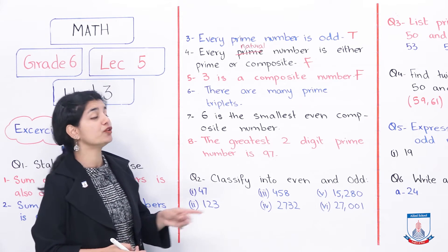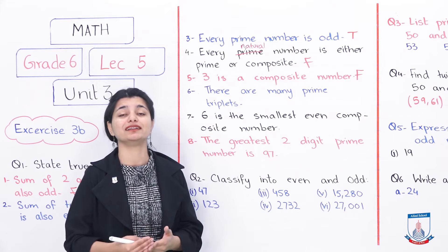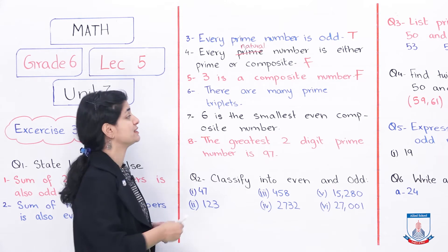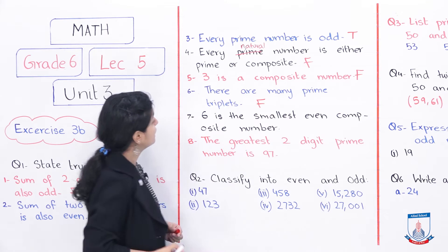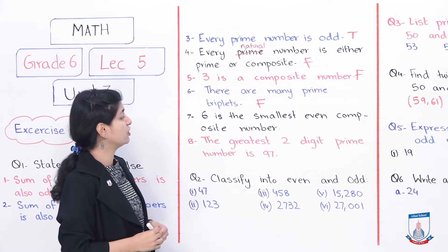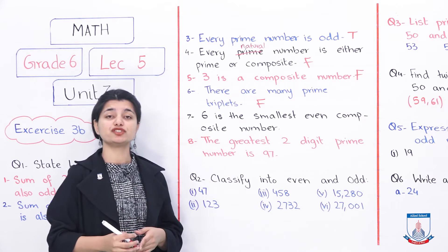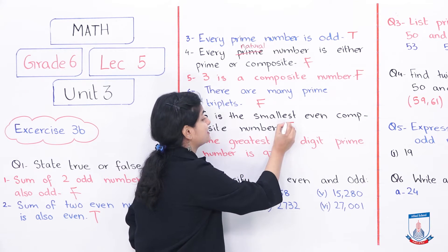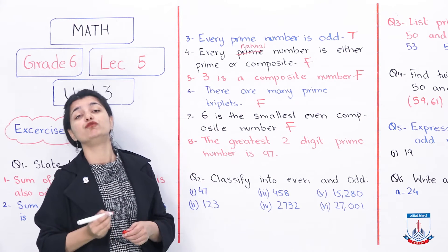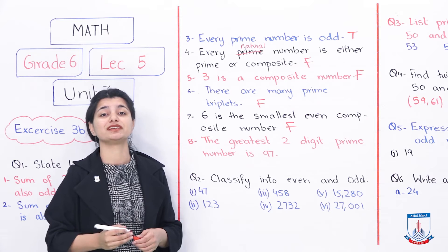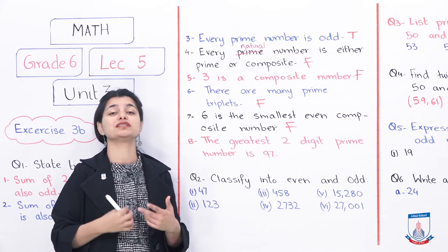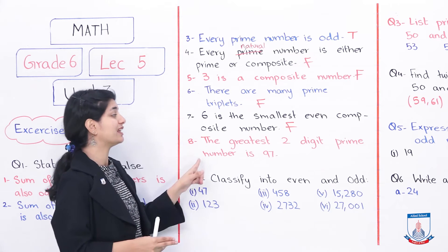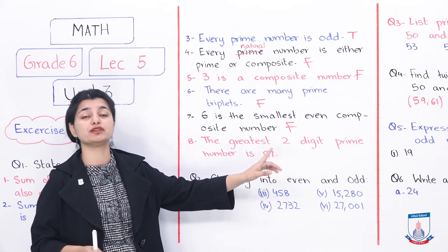Next: there are many prime triplets. This is false — there is only one prime triplet, which is 3, 5, and 7. Then: 6 is the smallest even composite number. This is also false, because 4 is the smallest even composite number. The factors of 4 are 1, 2, and 4, and 4 is even.